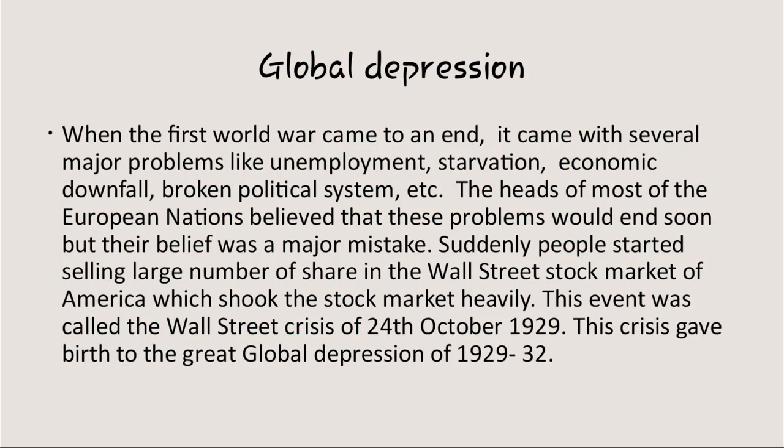The fourth point is the Global Depression. After the First World War, lots of problems emerged in the world, like unemployment, starvation, economic downfall, and a broken political system. The heads of most European nations believed these problems would end soon, but their beliefs were mistaken. Suddenly, people started selling a large number of shares in the Wall Street stock market of America, which shook the stock market heavily. This event is known as the Wall Street Crisis of 24th October 1929. This crisis gave birth to the Great Global Depression of 1929 to 1932.